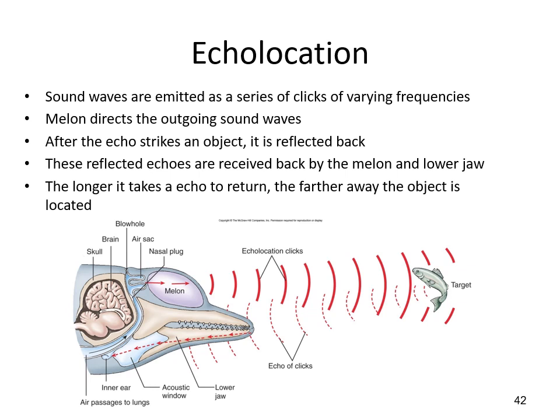Toothed whales use echolocation to locate prey and other objects. Sound is made in the blowhole, shaped and amplified through an organ in the forehead called the melon, bounces off objects, and is picked up in the jaw, which vibrates the inner ear. The brain then processes that information to determine what is in front of them and where it's moving. This is ideal in water because sound moves very fast and very far, giving a far greater detection range than sight alone.